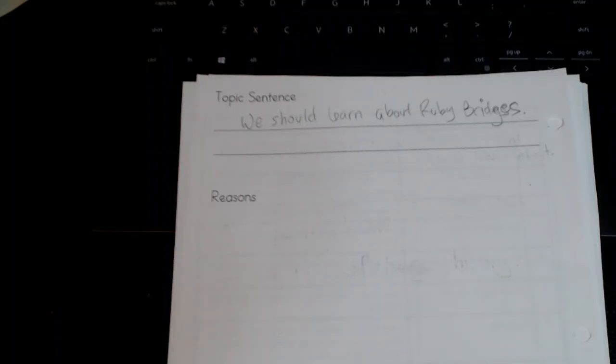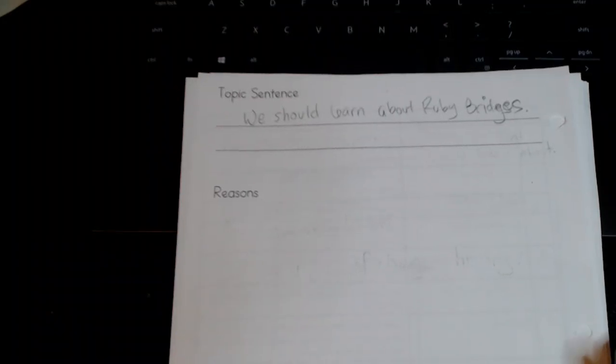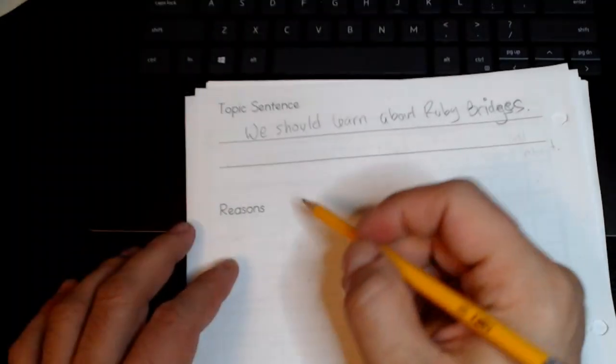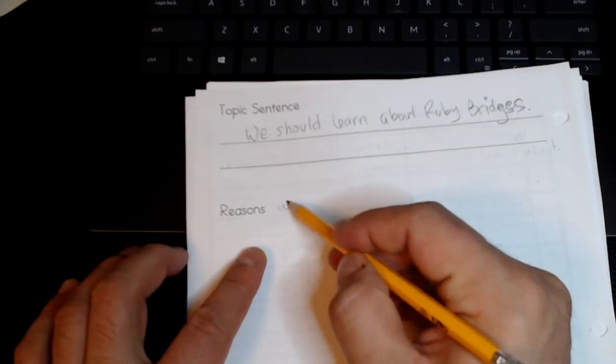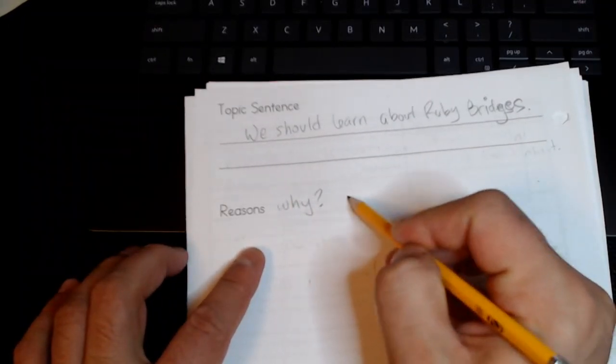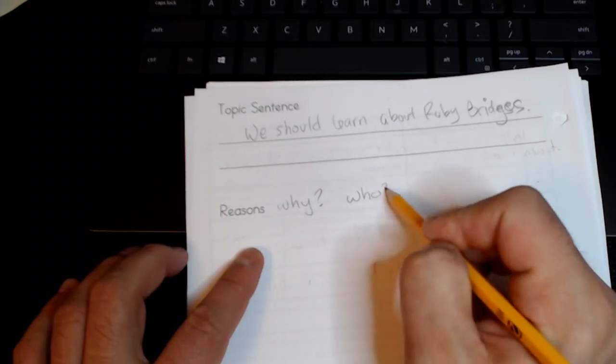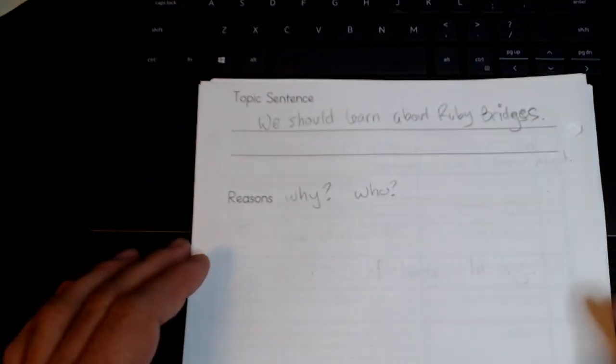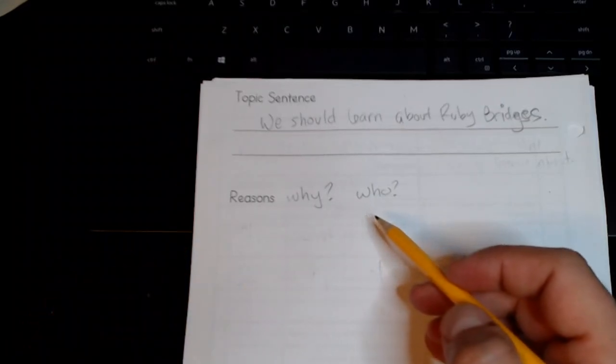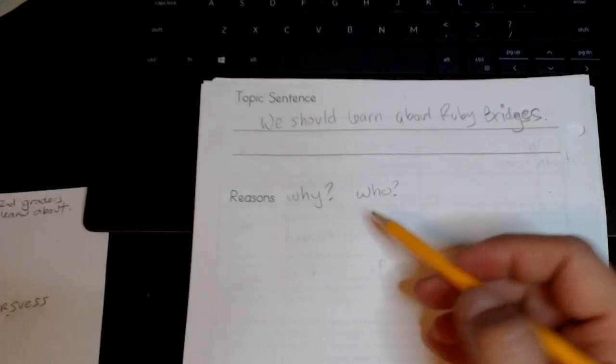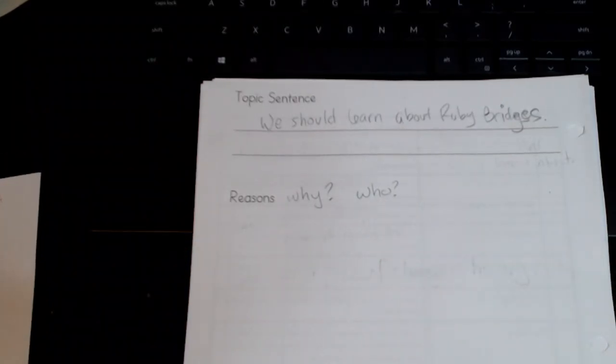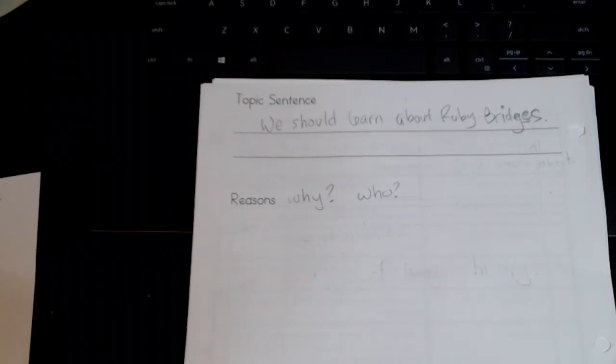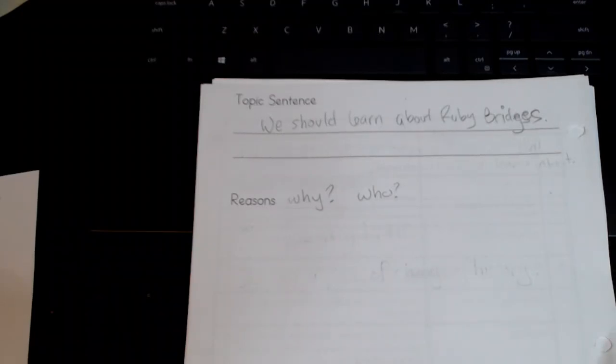So one of the things we want to do is find our reasons and usually our reasons are about why are we writing this and who are we writing this for. Well we can answer the who part pretty easily because the overall project topic is who do you think second graders should learn about. Well it's right there in the title. Our audience is second graders.